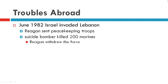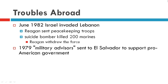In 1982, Israel invaded Lebanon, seeking to destroy the guerrilla bases from which Palestinian fighters had attacked Israel. Reagan sent peacekeeping troops in, and a suicide bomber killed 200 Marines, and he then had to withdraw that force.